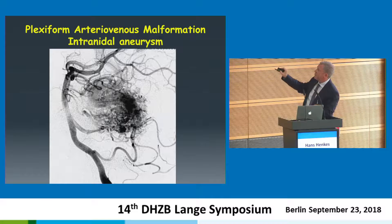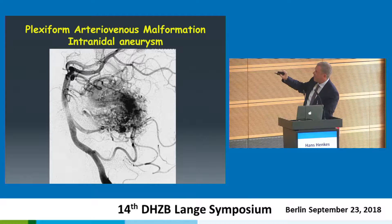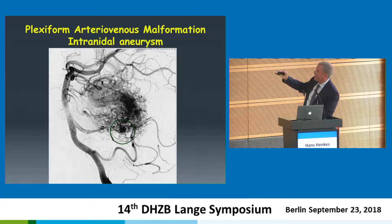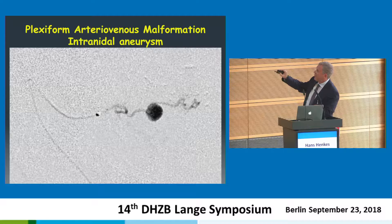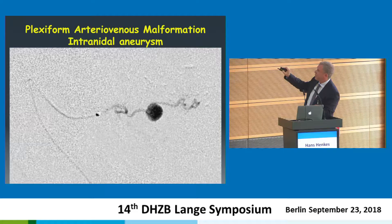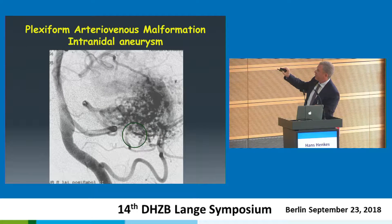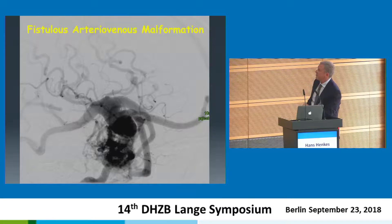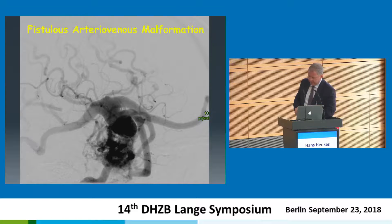This is a huge cerebellar AVM, and this is the reason for the hemorrhage: a small aneurysm in the nidus. You go with your catheter just in front of the aneurysm, put a drop of glue, the aneurysm is gone, and the patient has much less risk of hemorrhage.